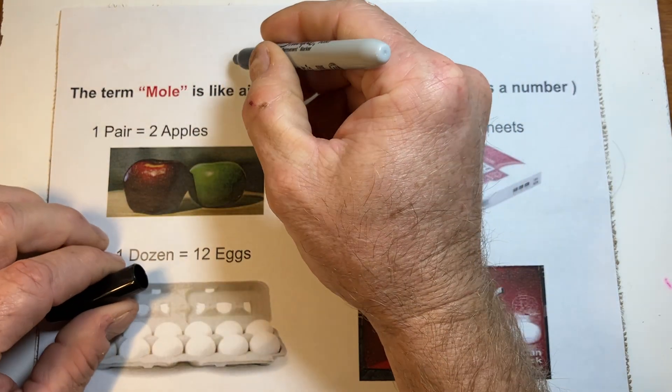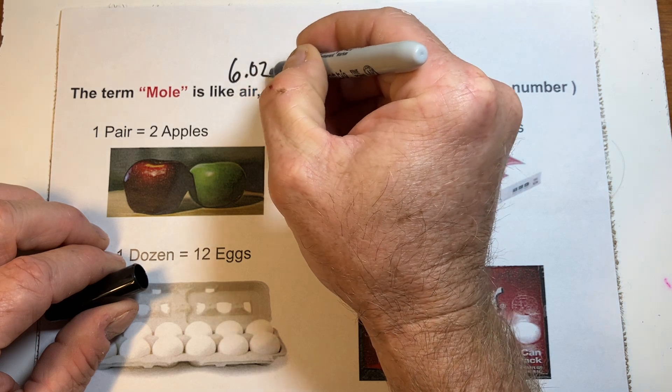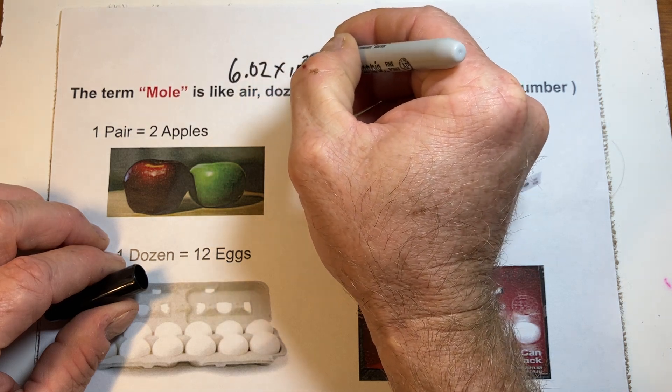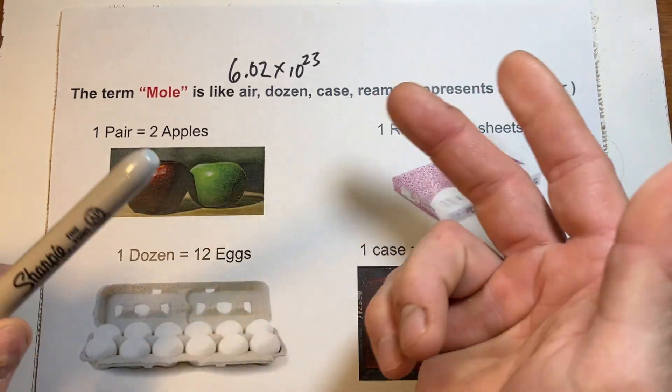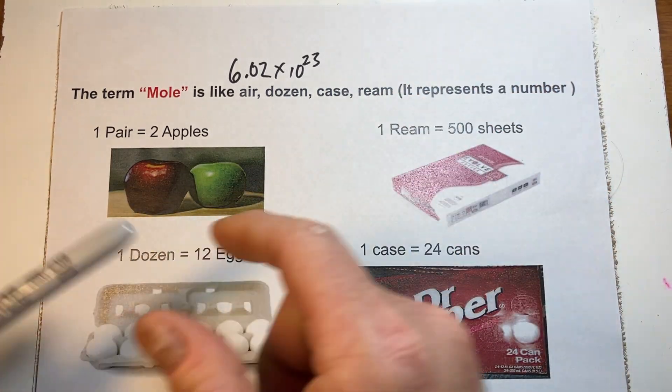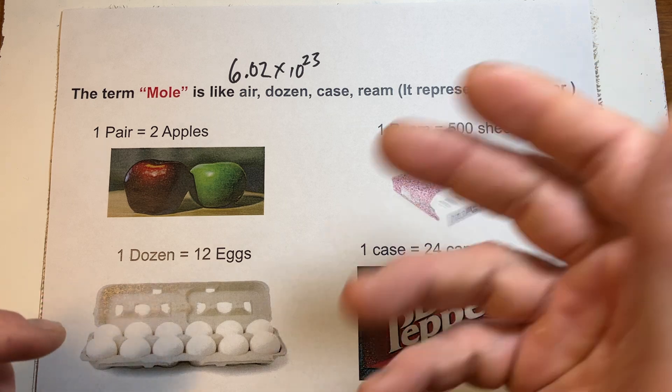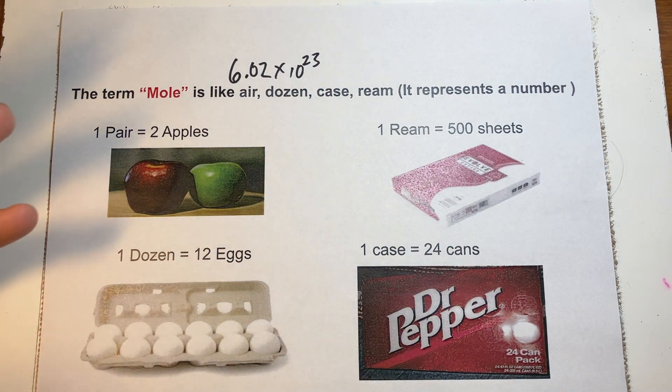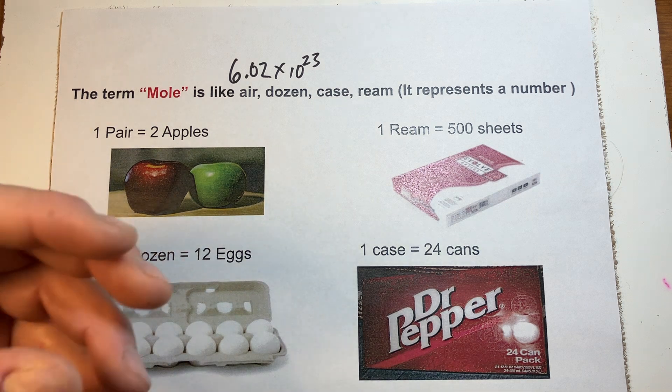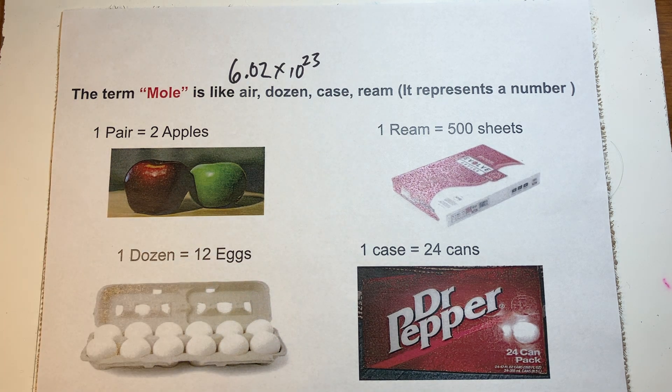It represents a gathering or collection of 6.02 times 10 to the 23rd of anything. It can be atoms. It could be cars. So that's what a mole represents - some set number collected together of things. Not the weight of things, but the number of things.